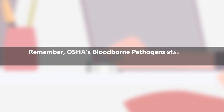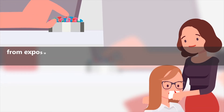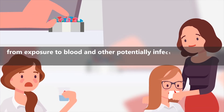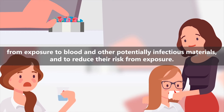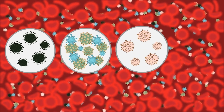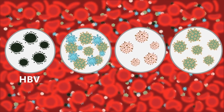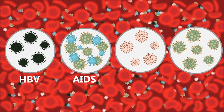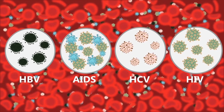Remember, OSHA's Bloodborne Pathogen Standard prescribes safeguards to protect workers against the health hazards from exposure to blood and other potentially infectious materials, and to reduce their risk from exposure. Implementation of this standard will help prevent hepatitis B cases and significantly reduce the risk of workers contracting AIDS, hepatitis C, or other bloodborne diseases.